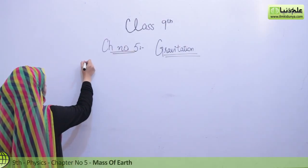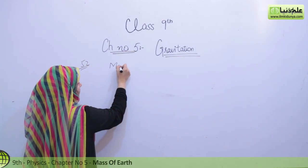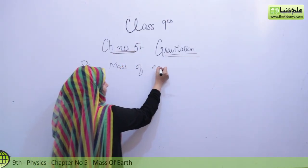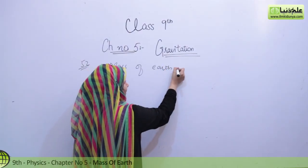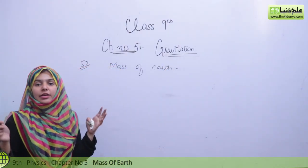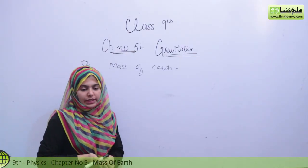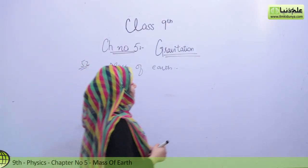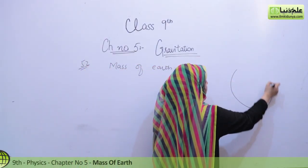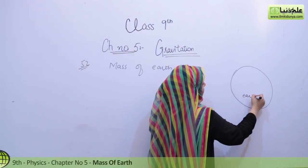Topic 5.2 is Mass of Earth. Now we need to find out the mass of Earth. This is a very big mass. We are considering the Earth, because we have to find out the mass of Earth.